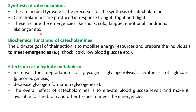Catecholamines are released in emergency situations because the body needs energy, and these hormones mobilize energy resources. Regarding carbohydrate metabolism, these hormones increase degradation of glycogen through glycogenolysis, enhance synthesis of glucose through gluconeogenesis, and decrease glycogen formation (glycogenesis). The overall effect of catecholamines is to elevate blood glucose levels and make it available for the brain and other tissues to meet emergency demands.